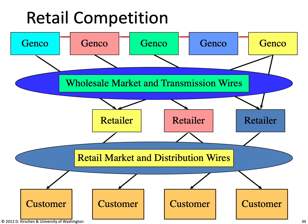The final model is retail competition. Generating companies still compete to sell electrical energy in wholesale markets, but now on the other side of the market there are retailers — companies that buy electrical energy in bulk over the wholesale market and sell it at the retail level to customers. In this model, all customers ultimately have the right to choose from whom they buy their electrical energy, selecting one retailer over another based on prices and conditions offered. So in this model, we have both a wholesale market over the transmission network and a retail market over the distribution network.